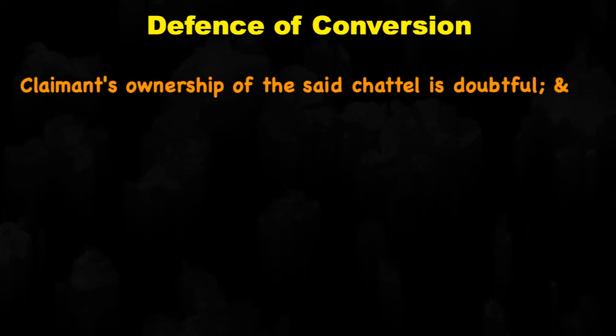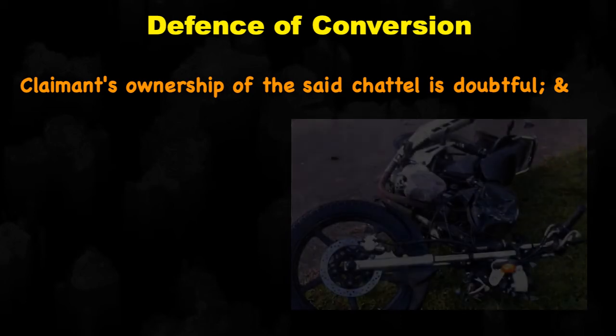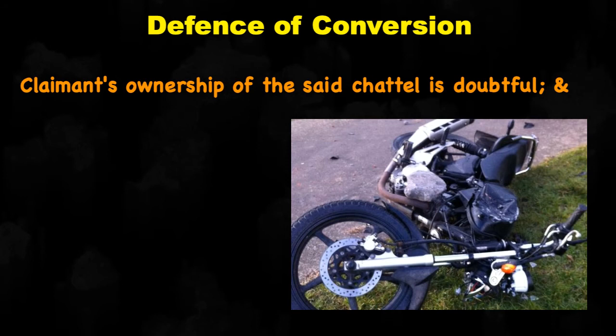Now the next topic is the defense of conversion. What are the defenses? First, the claimant's ownership of the said chattel is doubtful. So if you are claiming that your property is damaged by someone but you are unable to prove that it is your property — say you are claiming your bike is damaged by B, but you are not able to prove that the bike actually belongs to you, meaning you do not have the actual papers — then even if that bike is yours, if you cannot prove it, you cannot claim the damages. You must prove ownership through proper documents.